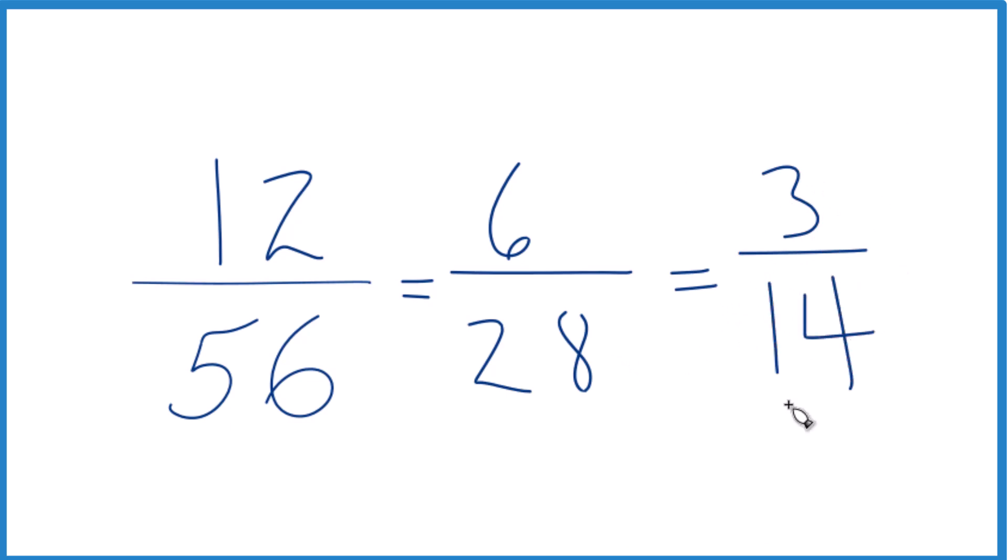And we can't simplify this any further. There's no number that goes into both 3 and 14 other than 1. So when we simplify the fraction 12/56, we end up with 3/14, and that's in lowest terms.